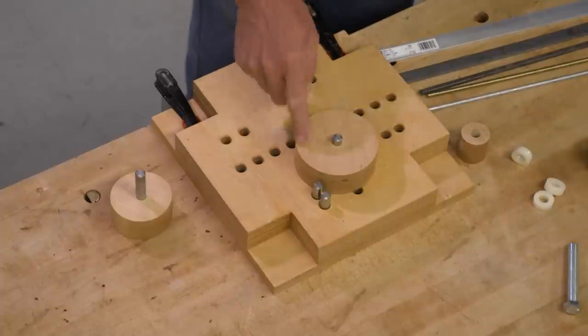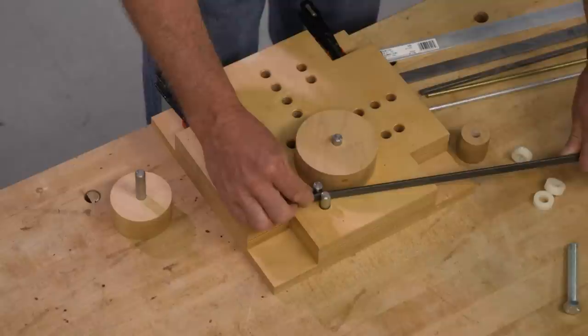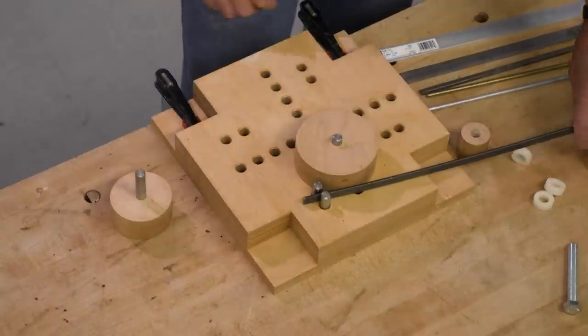To use the jig, I'm going to use the form which matches the desired radius. These two pins are going to retain the free end of my stock. From there, it's just a simple matter of wrapping around the form.